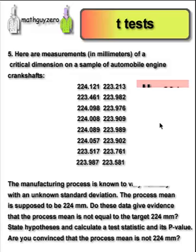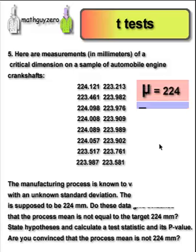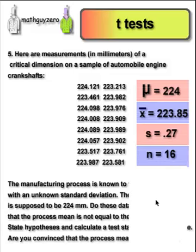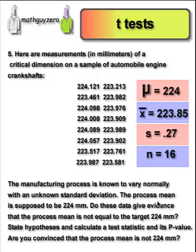OK, so the stated mean is 224. We found the sample mean. We found the standard error, and the sample size is 16. Let's just go through the null hypothesis testing process.